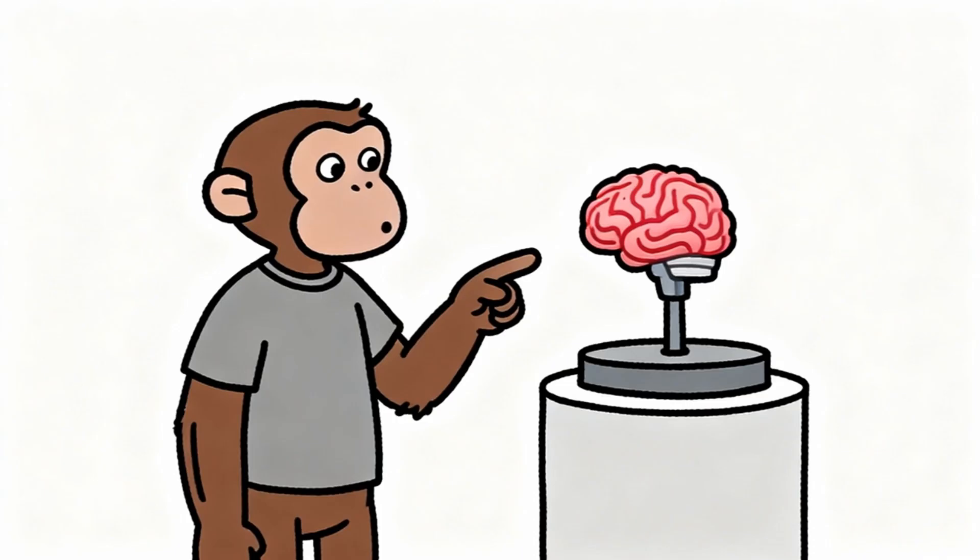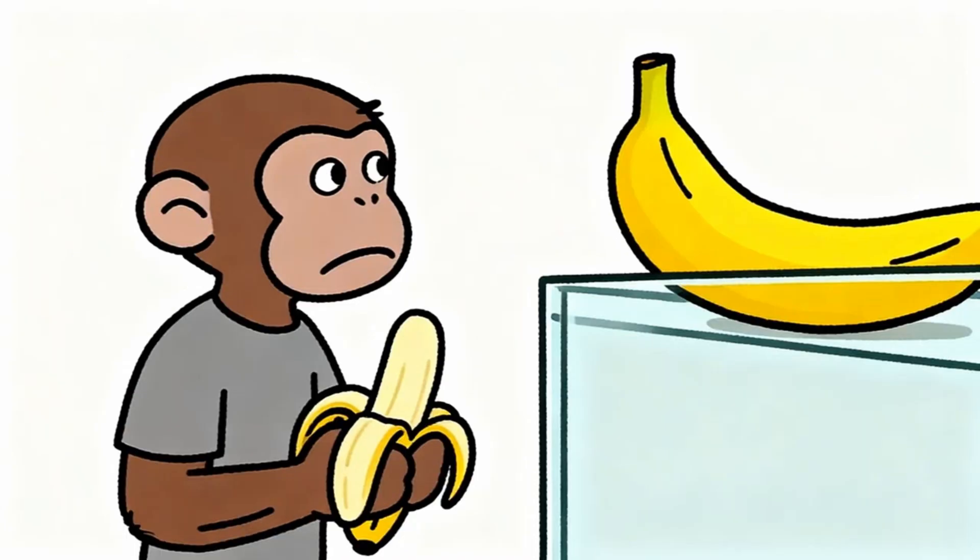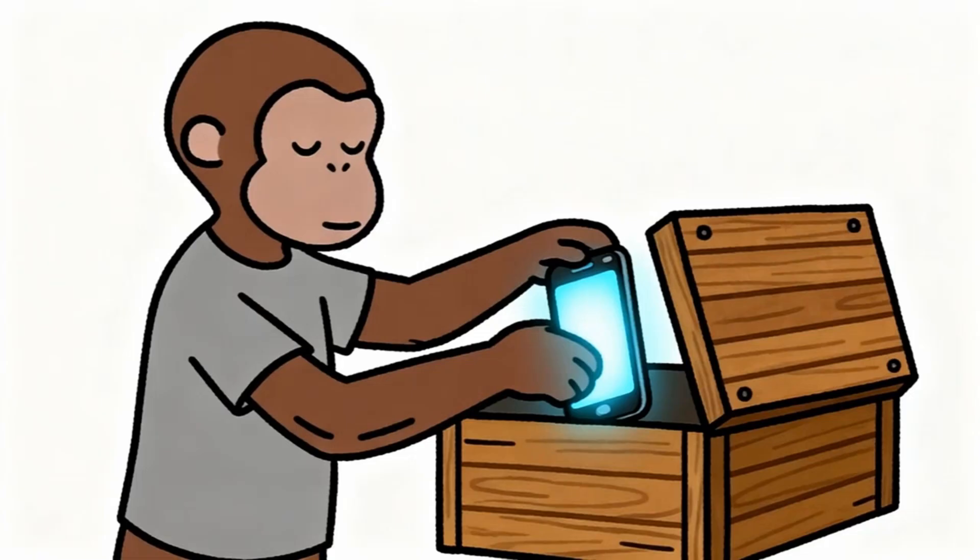Breaking free from dopamine trap requires monkey to understand how brain actually works. Dopamine is not reward chemical like most monkeys believe. Dopamine is wanting chemical. Dopamine creates desire for banana, not satisfaction from eating banana. The actual pleasure comes from different brain chemicals released when monkey achieves goal through effort.